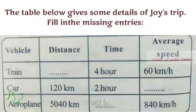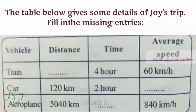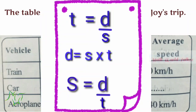The table below gives some details of a journey. Fill in the missing entries. There are 3 vehicles: train, car, and aeroplane. For the train, distance is not given but time and speed are given. For the car, average speed needs to be found. For the aeroplane, time needs to be found. These can all be found using the formulas already given. Try to find them out. Thank you.